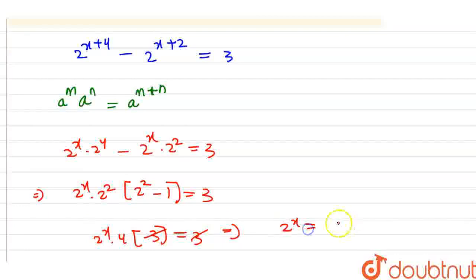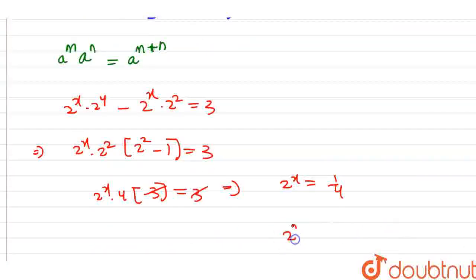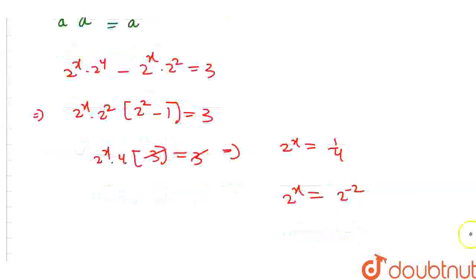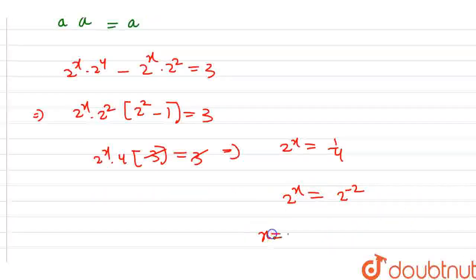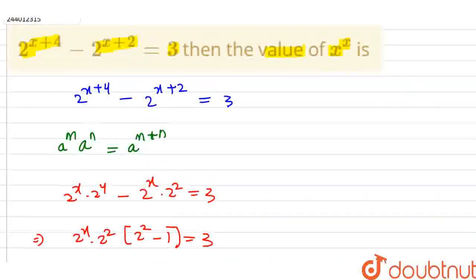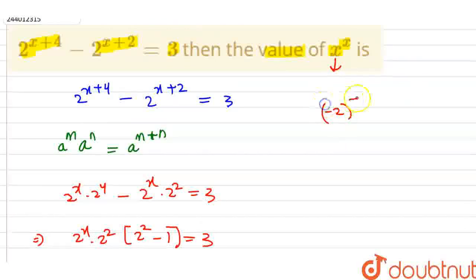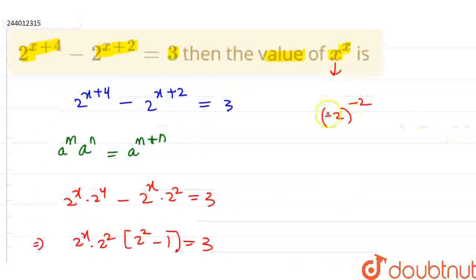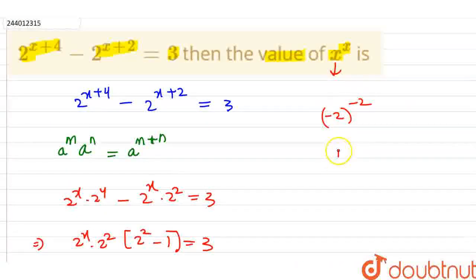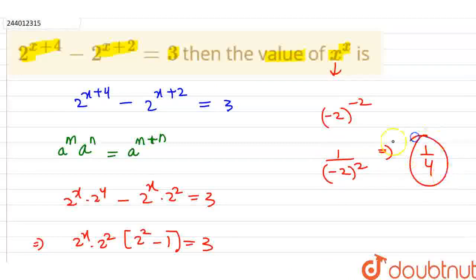That implies 2 to the power x is equal to 1 by 4, which is 2 to the power minus 2. So x equals minus 2. Now we find the value of x to the power x, which is minus 2 to the power of minus 2. If the power is negative, we bring it to the denominator, giving us 1 upon 4. This is our required final answer.